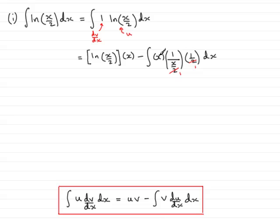You'll also notice that this x cancels with the x down here. x times 1 over x is just going to cancel and leave me with 1.